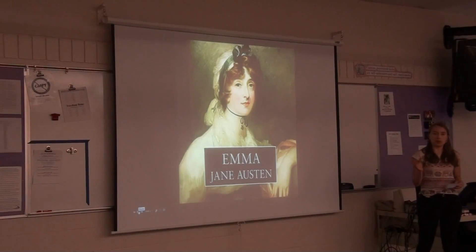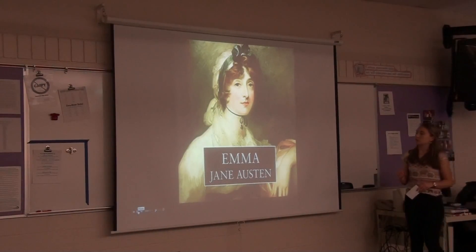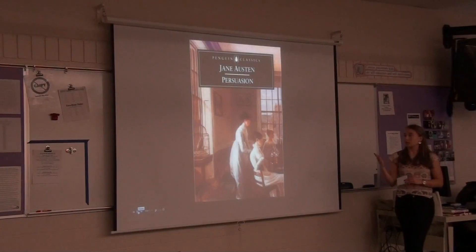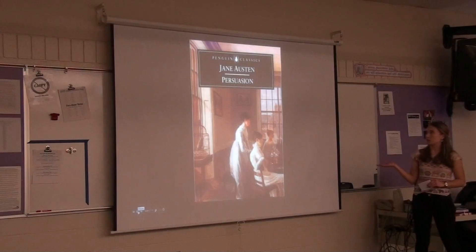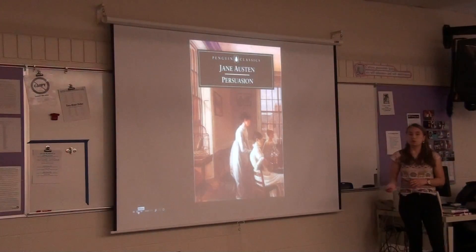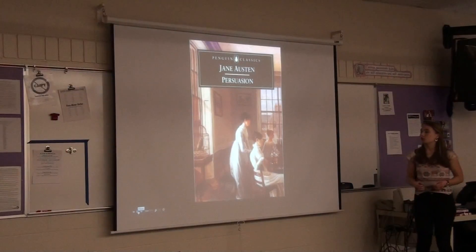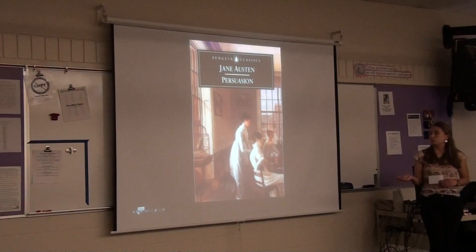So what Emma does is she persuades Harriet to completely forget about the guy in a lower social class and to try to find someone in her own social class. This is really similar to the next book I read, which is Persuasion, also by Jane Austen, where a girl named Anne is persuaded, like Harriet, by her friends and family to completely forget about someone she likes in a lower social class, in order to keep her from being judged by others.